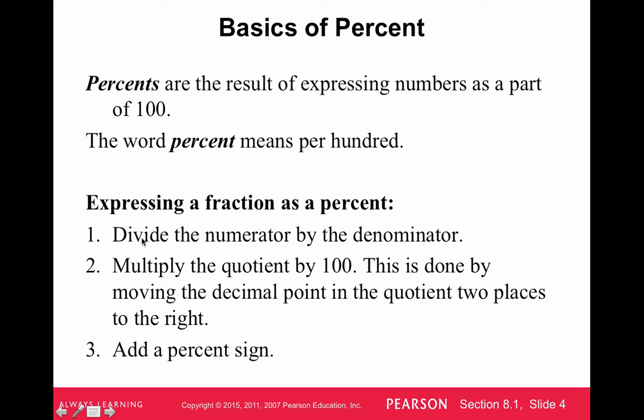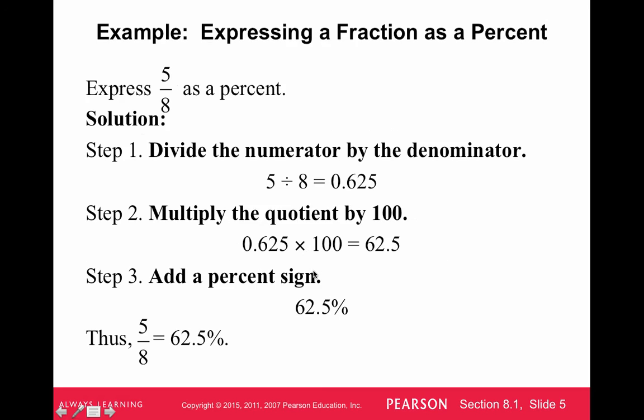So expressing a fraction as a percent, if we have a fraction, we divide the numerator by the denominator and multiply by 100. This is done by moving the decimal point two places to the right, or you can just do it in your calculator, multiply it by a hundred, and it'll do it for you, and then put the percent sign in there. So, if you wanted five-eighths as a percent, you divide five by eight, you get .625, you multiply that by 100, which moves the decimal two spots to the right, and you get 62.5%. Pretty simple. If you're not comfortable moving the decimal, just do the multiplication by 100 in your calculator. Nobody will judge you.